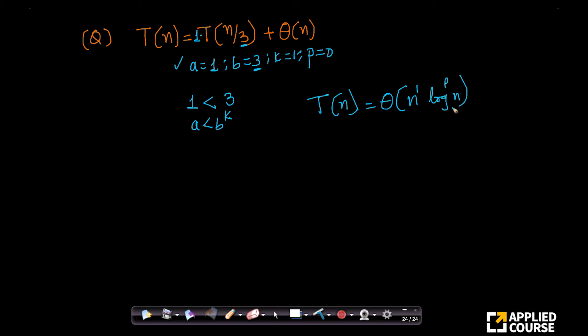Log n power p. My p is 0, so this can be ignored. What do I have? I have theta of n. That is it. Very, very simple.